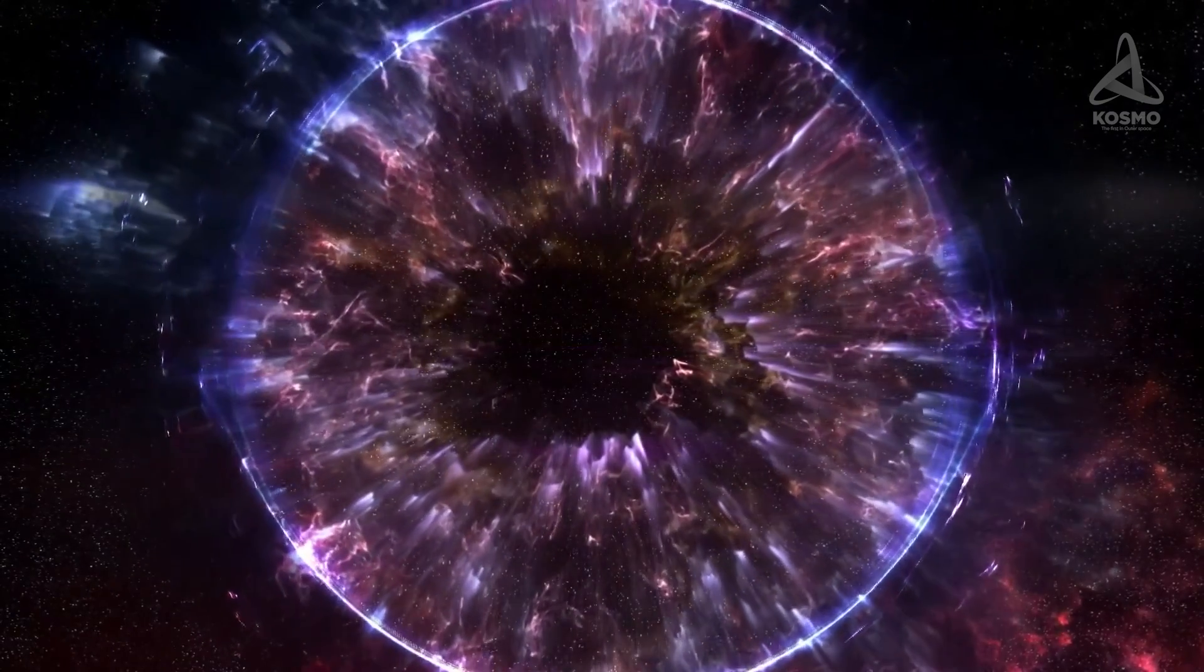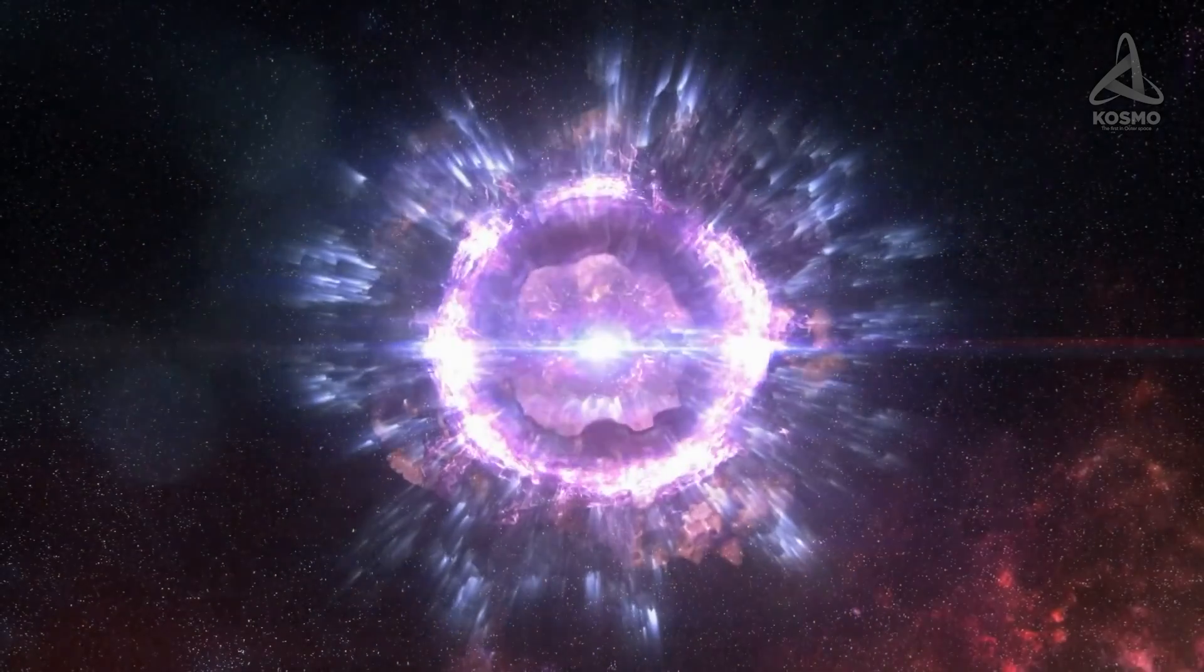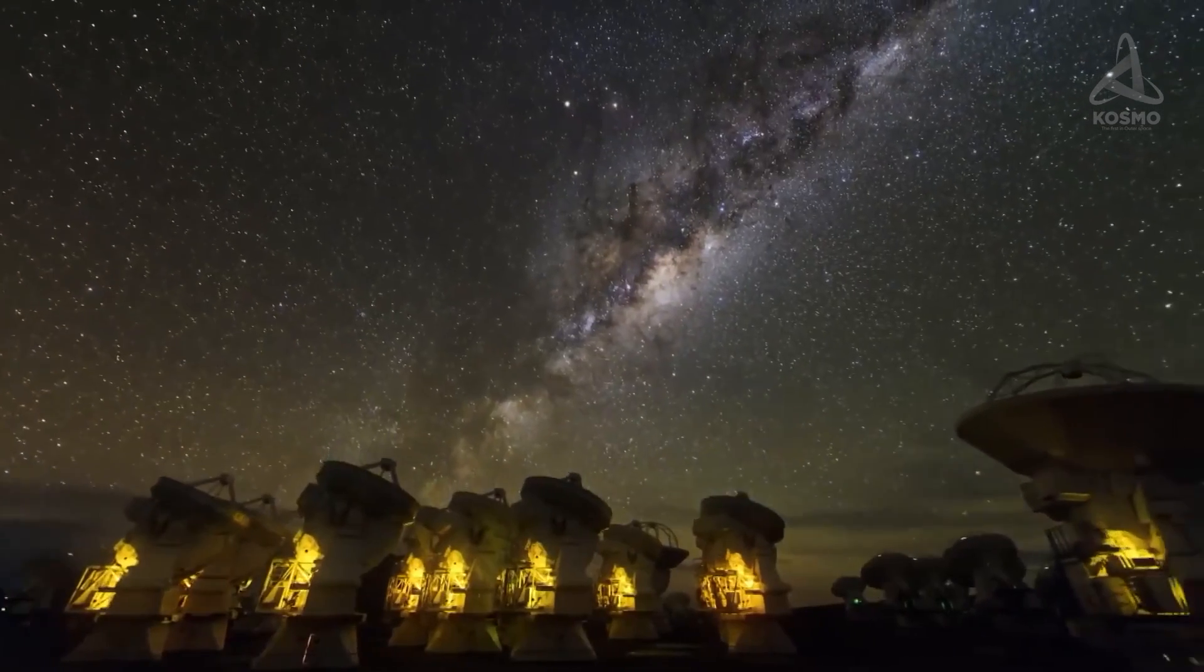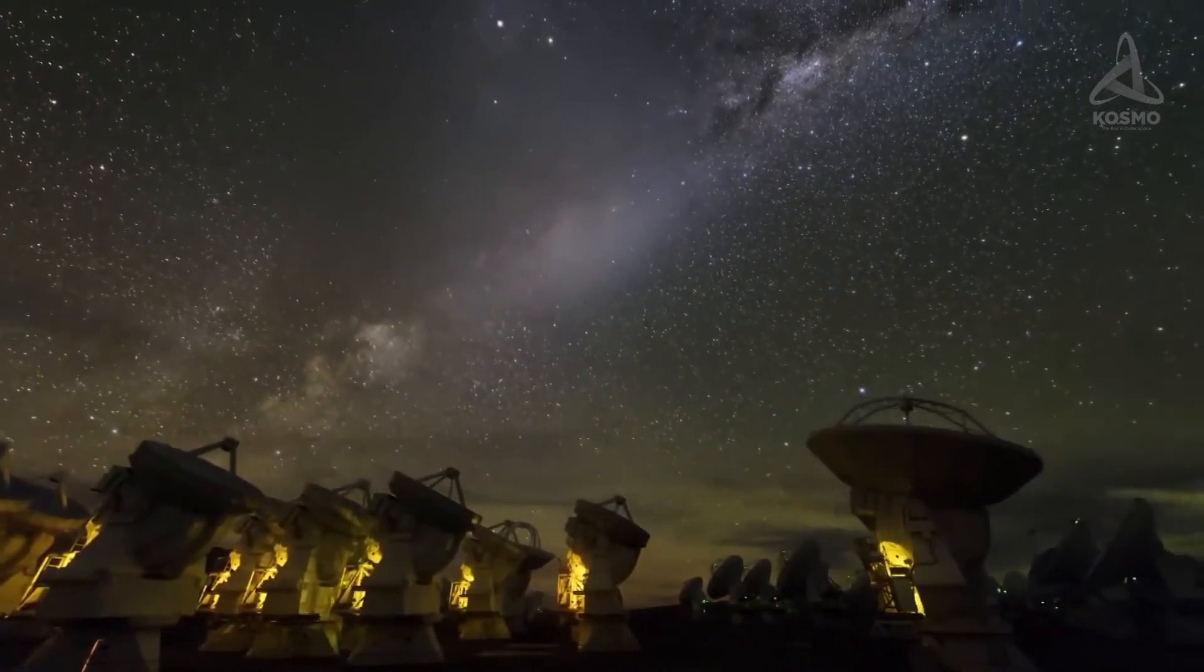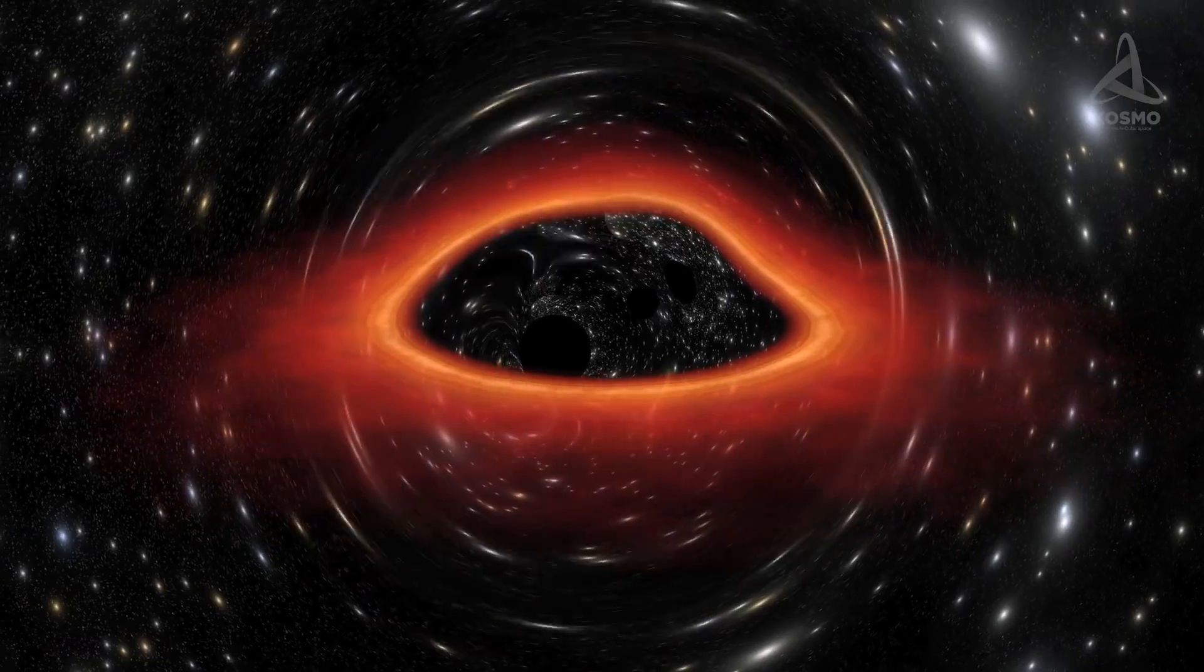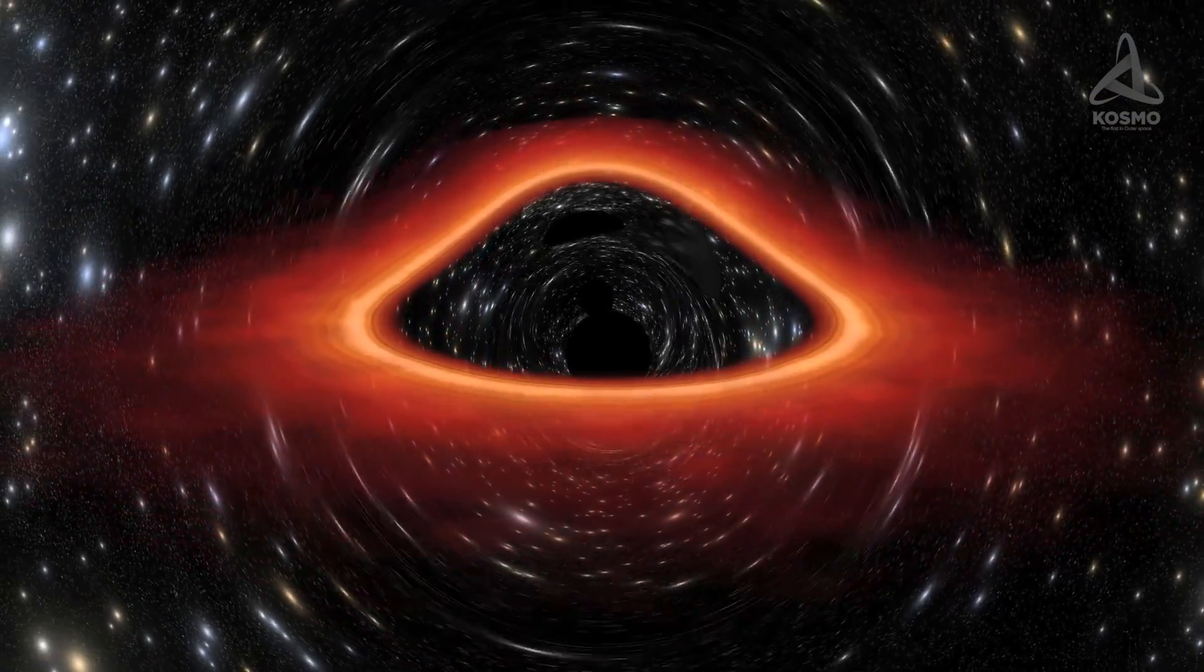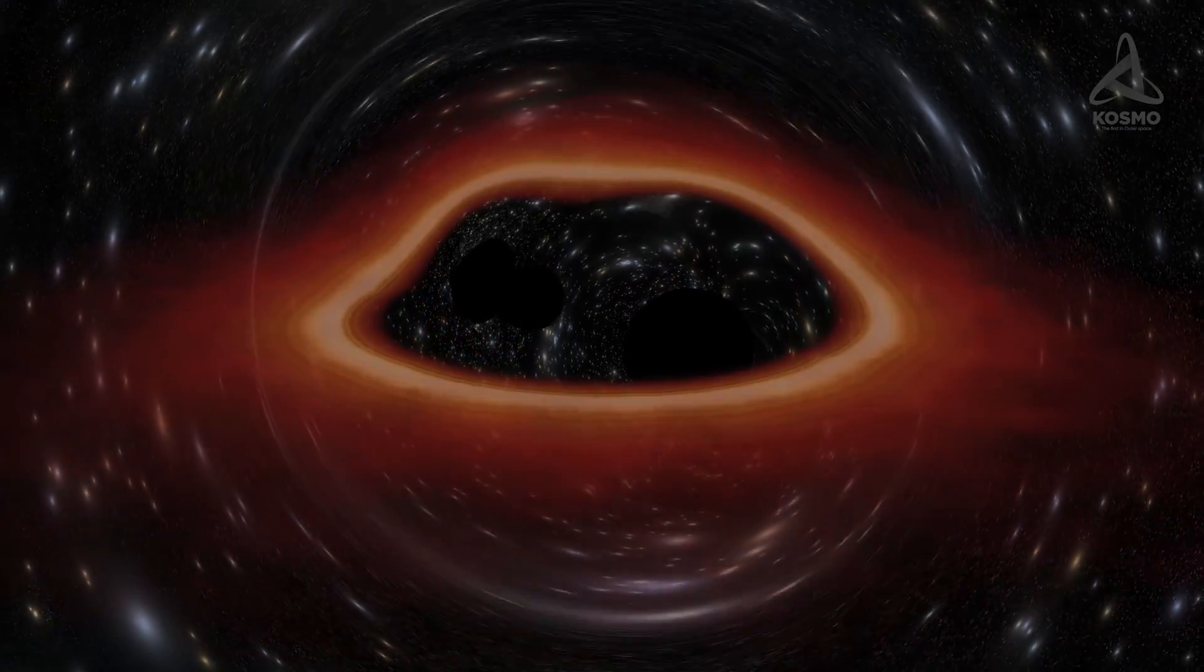Black holes used to remain a mathematical abstraction for a long time, then they got the status of hypothetical celestial objects. The searching process was not easy, as it is impossible to directly observe an object that doesn't emit anything at all, including light. The only thing that allows us to guess the whereabouts of black holes in the vast expanses of space are peculiar effects created by their impressive masses, such as the effects of accretion disks and gravitational lensing.